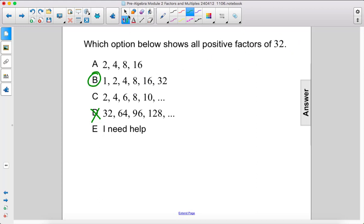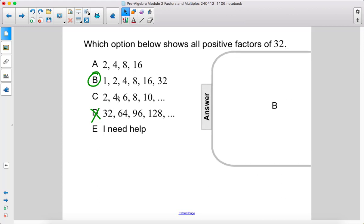The answer here is B. Just don't forget, 1 is a factor, and we don't get the dots at the end because it doesn't go on forever. It ends at 32.